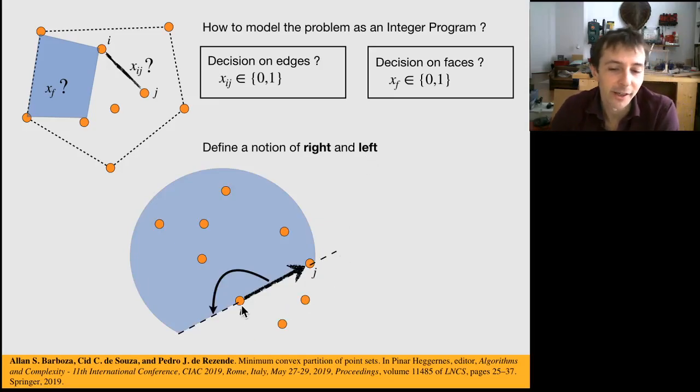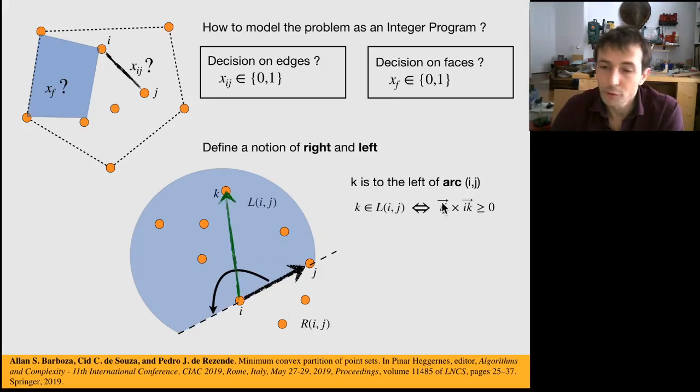When you have an edge ij, you can give it a direction from i to j. And once you have a direction, you have a natural left side and right side. And this can be defined using the cross product, for instance.